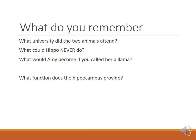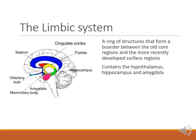What university did the two animals attend? Limbic U — because we're talking about the limbic system. Hippo could never forget because the hippocampus is a brain structure for memory. Amy becomes angry because the amygdala controls emotions, primarily anger and aggression. The limbic system is a border between the more primal areas of the brainstem and the more advanced areas of the cerebral cortex. This area of your brain is fully developed as a teenager — but the area that regulates it isn't fully developed until about age 25.